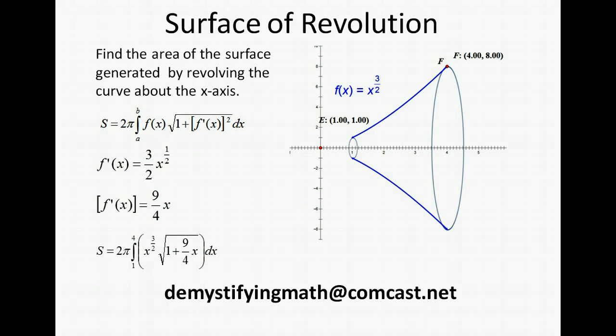Plugging into the formula we have 2π. We're going to integrate from 1 to 4 looking for the surface area between 1 and 4. x^(3/2) times the square root of 1 plus (9/4)x dx.